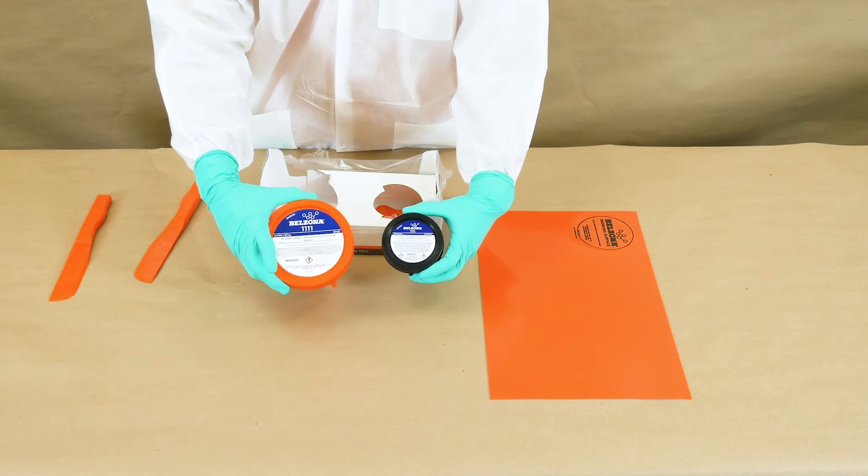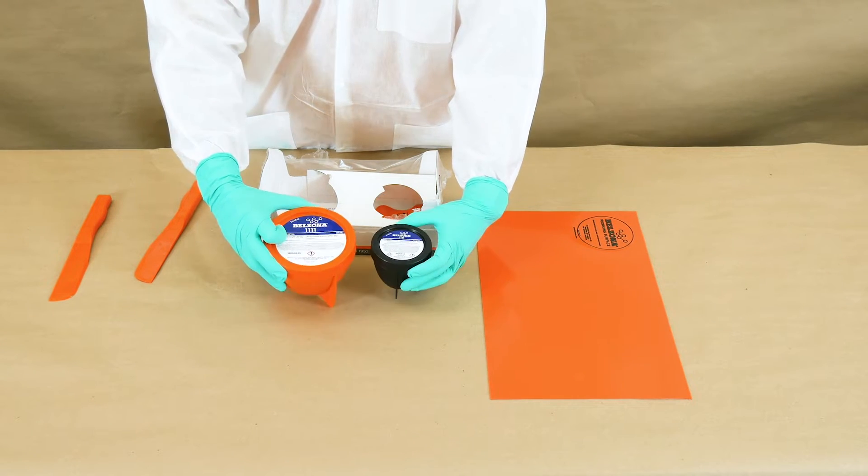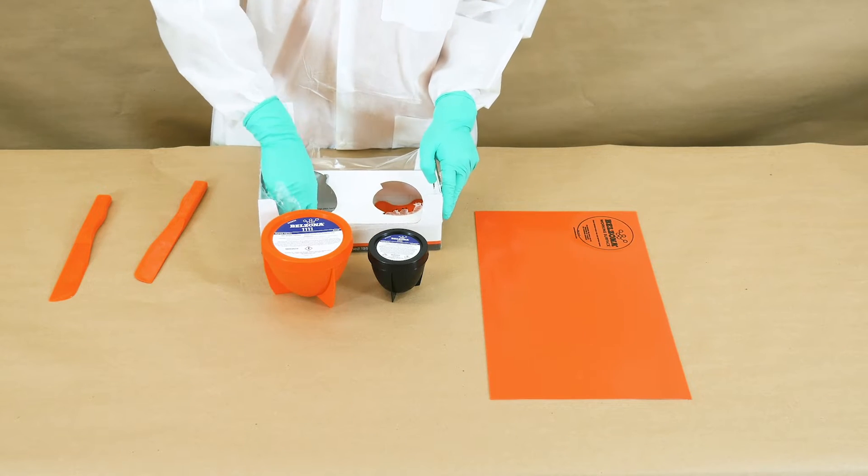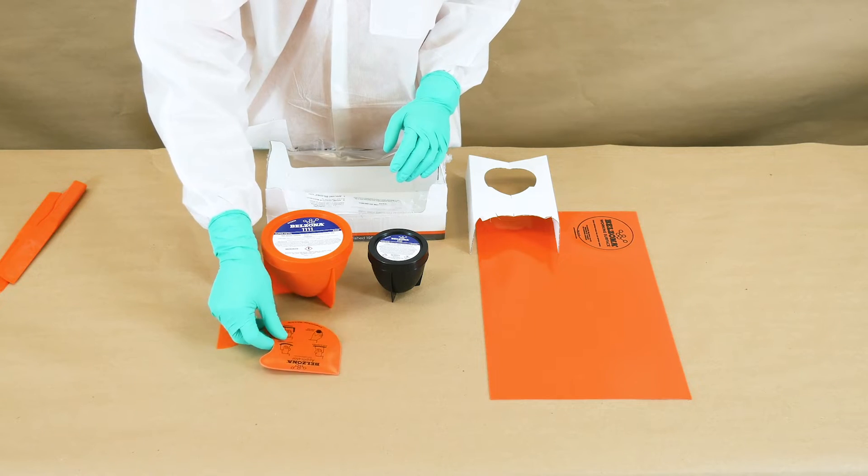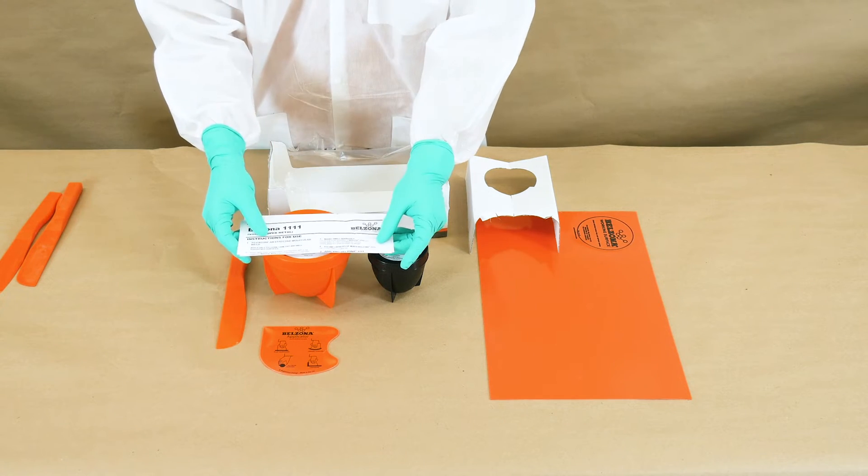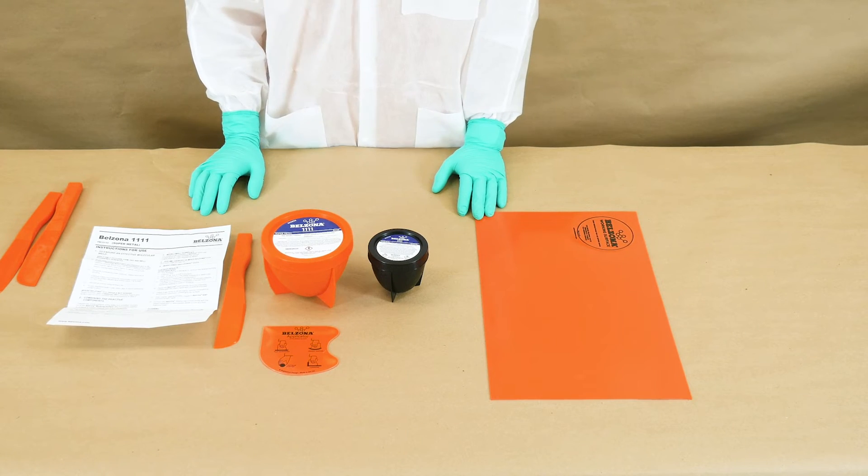For the mixing you will need two components, base and solidifier of Belzona 1111, a Belzona working surface, a spatula, and an applicator. Each product package comes with a manufacturer's instructions for use.